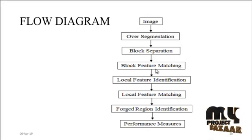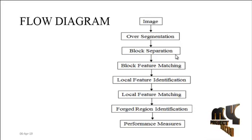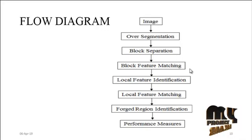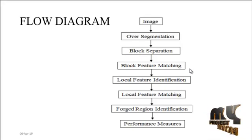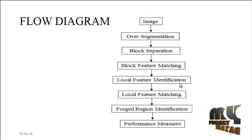Then block separation is carried out, followed by block feature matching. In the block separation step, local key points are identified from the image using the SIFT feature extraction method. After extracting SIFT features, block feature matching is done based on distance calculation, so the features extracted from the image are matched using the block feature methodology.